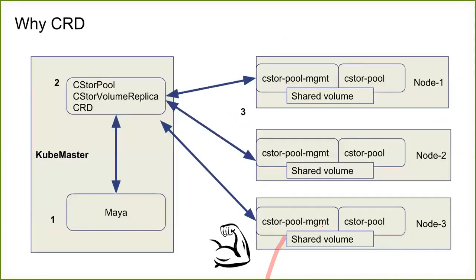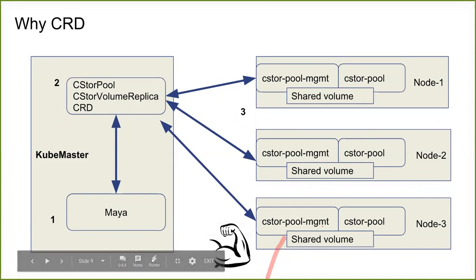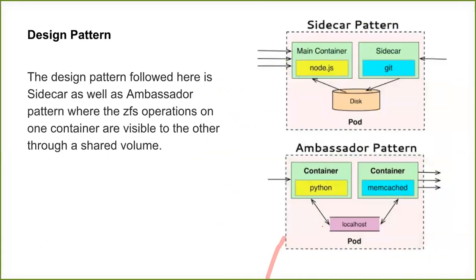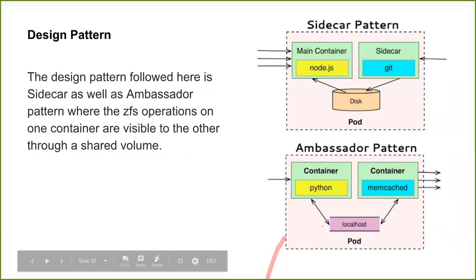The design pattern we have followed is the sidecar pattern. We have two containers: the CStore pool container and the management container. Management is the sidecar — it interacts with Kubernetes. In this pattern, the main container handles business logic and the sidecar handles additional supporting functions. Communication happens via a shared disk, and it can also be considered an ambassador pattern since both containers share the same network IP within a pod.